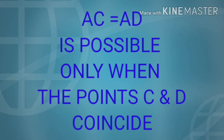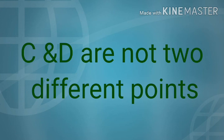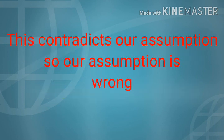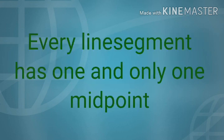AC equals AD means points C and D must coincide. From the axiom 'things which are double of the same things are equal to one another,' C and D are not two different points. This contradicts our assumption. Hence every line segment has one and only one midpoint. Hence proved.